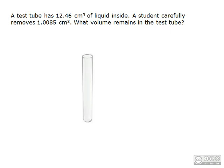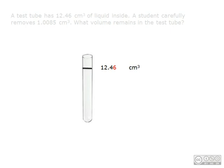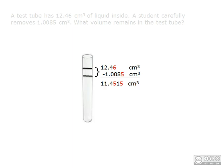Here's our test tube. We know that there are 12.46 cubic centimeters of liquid inside, which is this line. We want to remove 1.0085 cubic centimeters, which would bring our volume all the way down to here. After plugging in these numbers into our calculators, we get an answer of 11.4515 cubic centimeters.